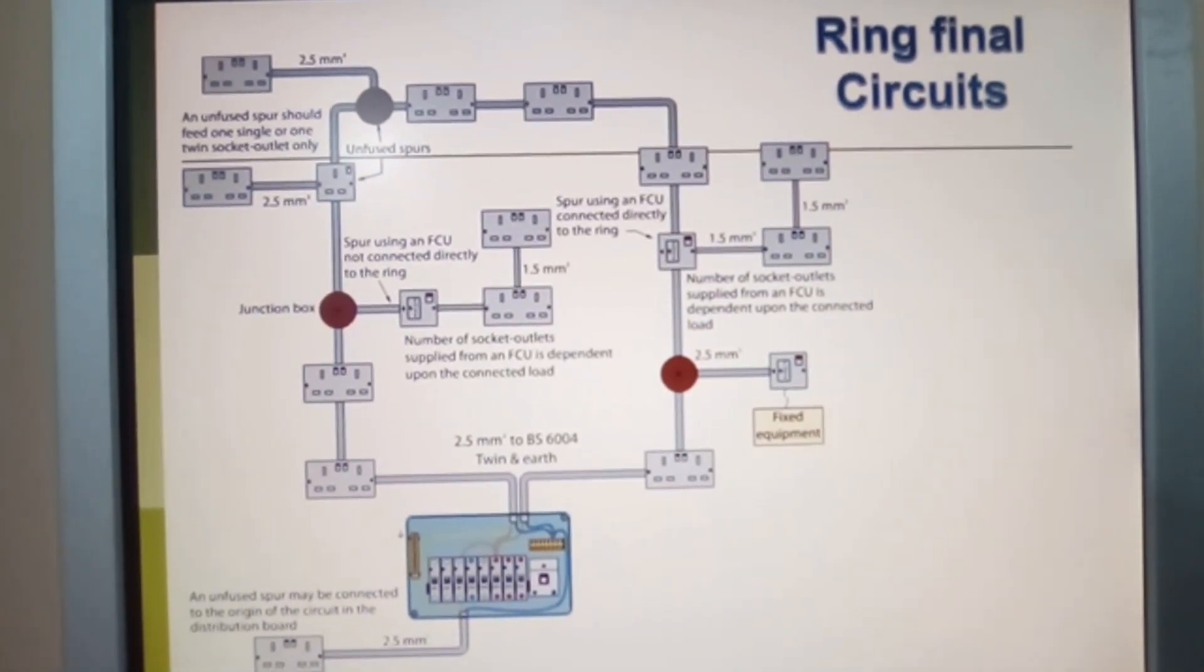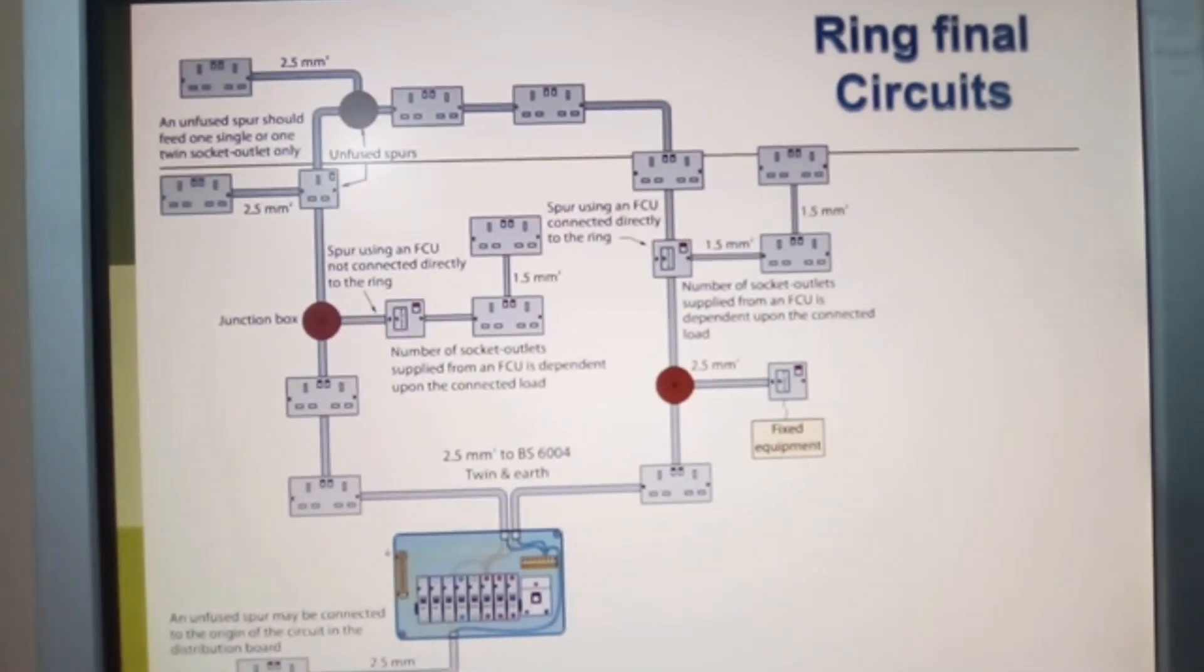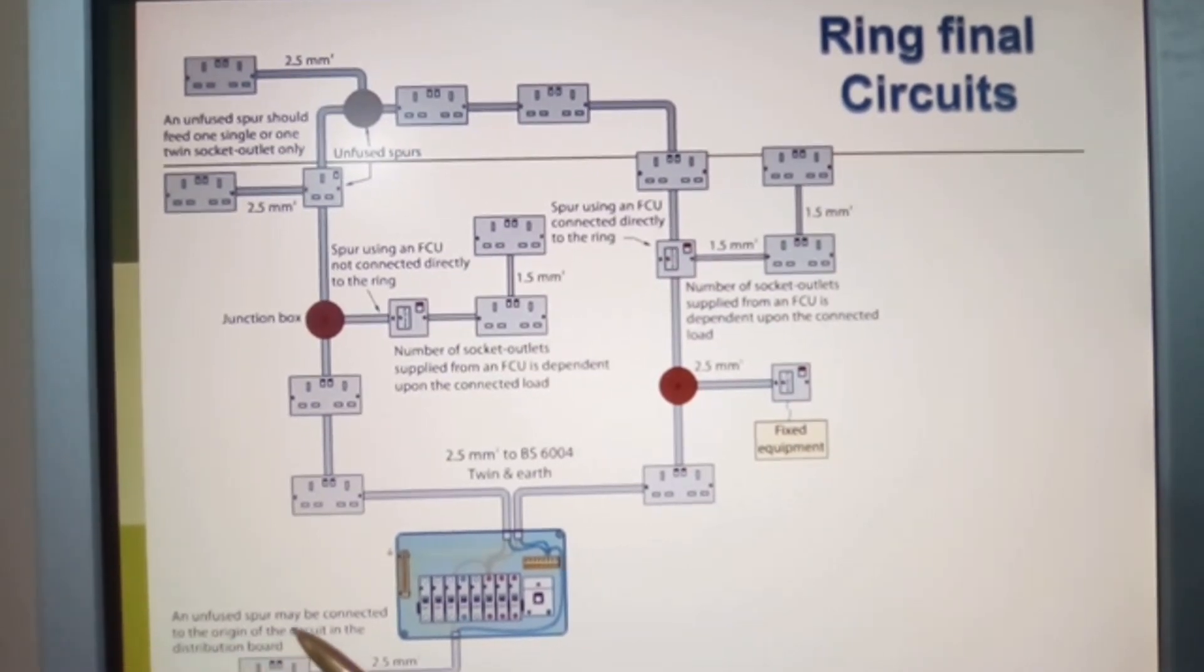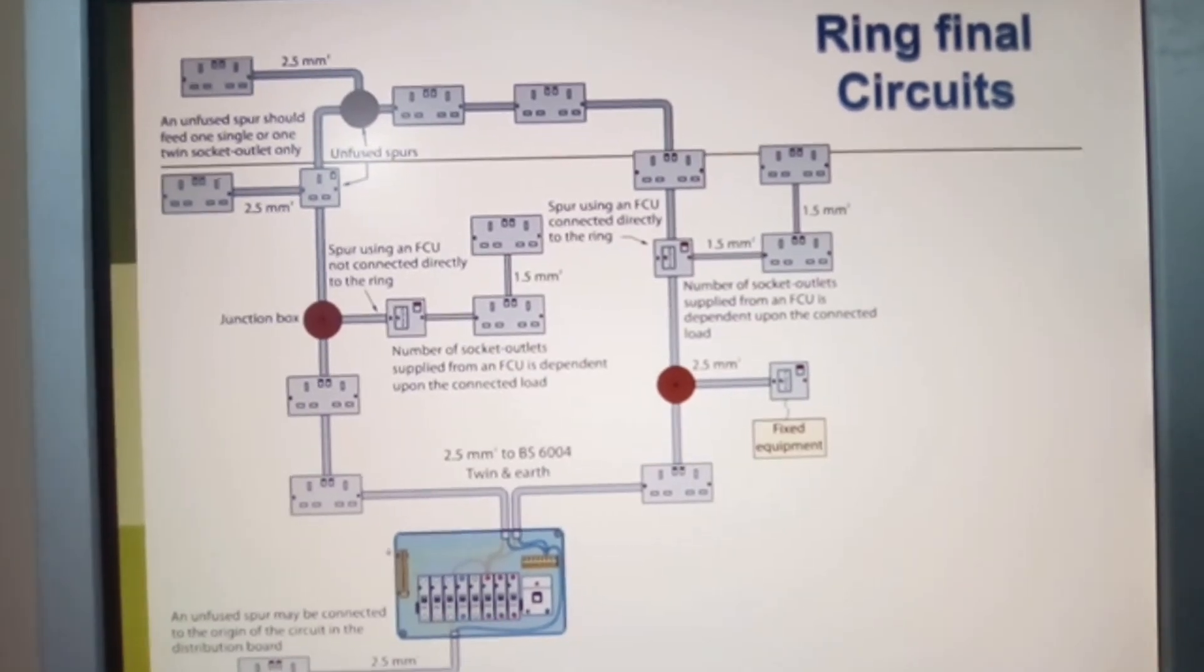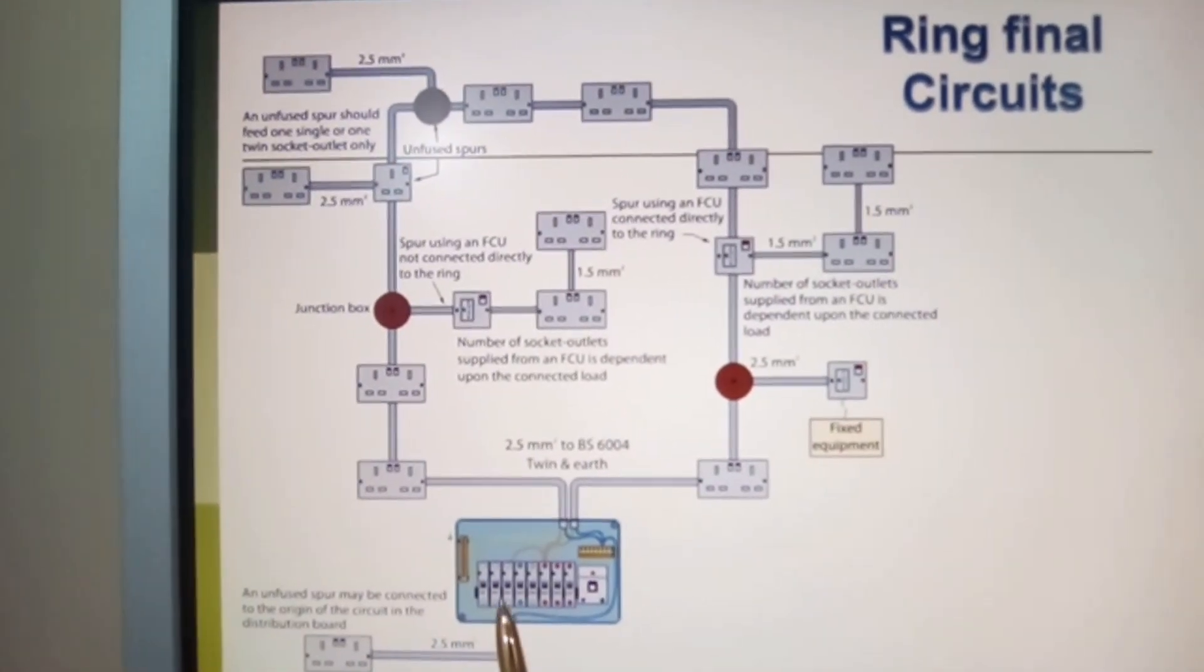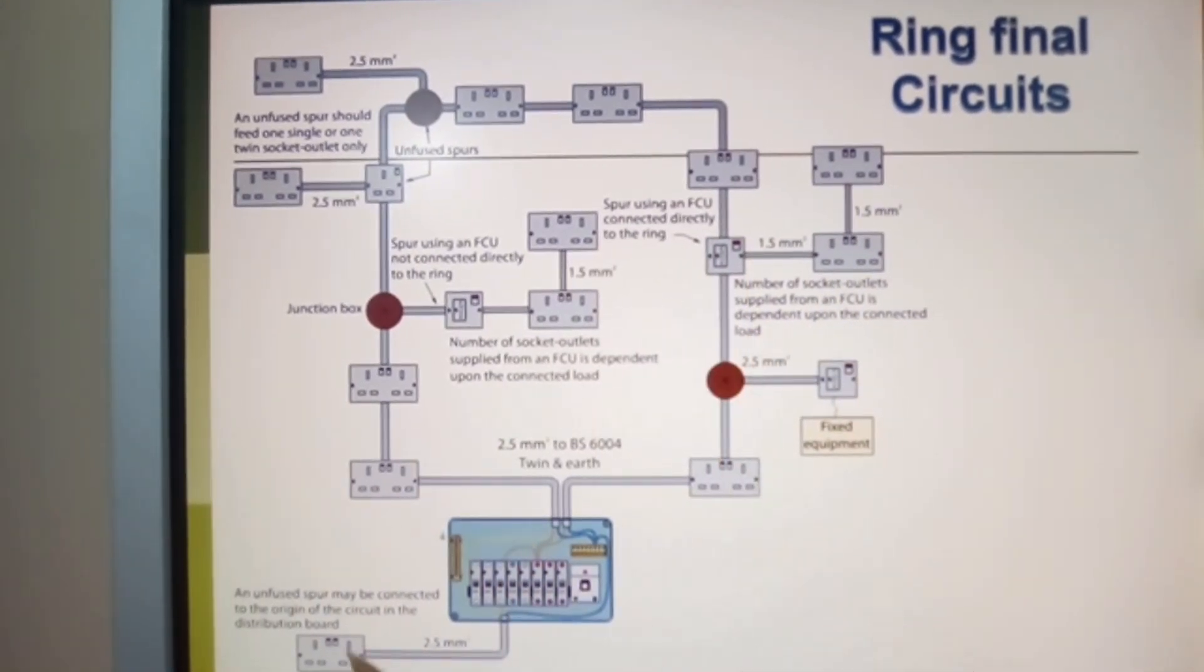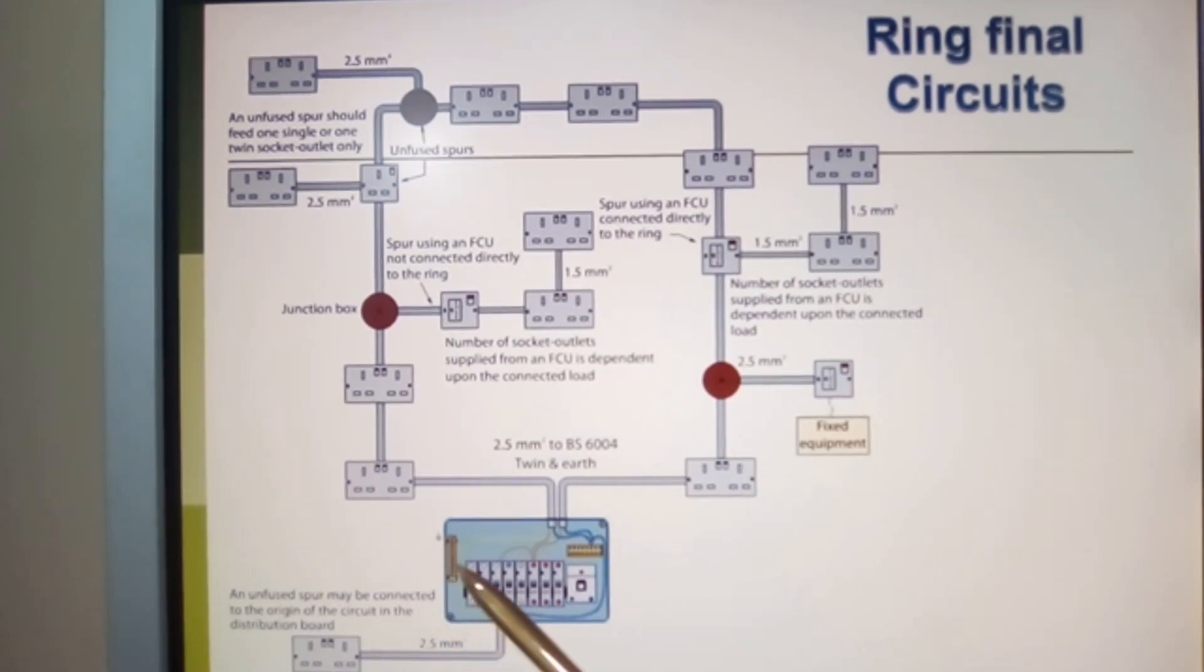An unfused spur may be connected to the origin of the circuit in the distribution board, but we don't really do that so much now because we already have a ring main circuit and can take off the ring main. Check with the IEE regulations. If we were going to do this, it would simply be a radial circuit on its own fuse or circuit breaker.